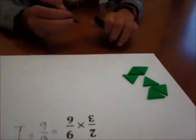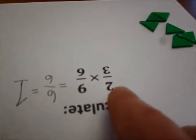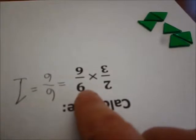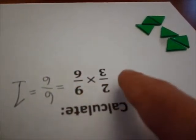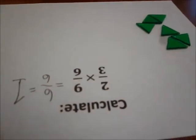So notice the procedure that we used to find out two-thirds of nine-sixths, right? We broke up the nine-sixths into three equal parts, and then we took two of those parts, correct?